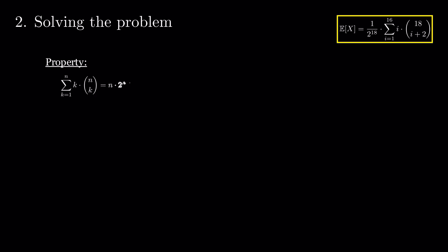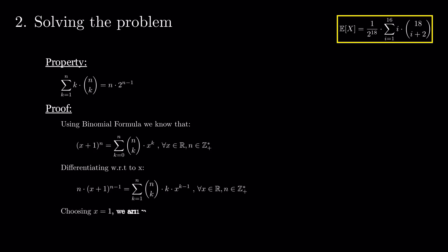For this, we will use the following property. To prove this, we employ the binomial formula for x plus 1 to the power of n. We differentiate with respect to x and replace x with 1 in the final formula.